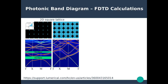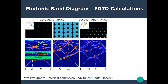We can engineer the band structure by changing the size, shape, composition, or separation of the building blocks. Switching from a square lattice to a triangular lattice — with the same disks and composition — changes the Brillouin zone symmetry points (Gamma, M, K) and eliminates the band gap. Interestingly, this transition from square to triangular lattice is exactly what the chameleon does, engineering the photonic band structure of its guanine nanocrystal lattice.